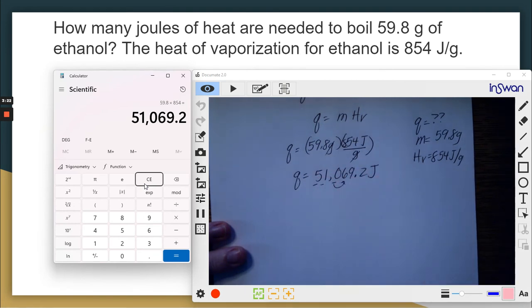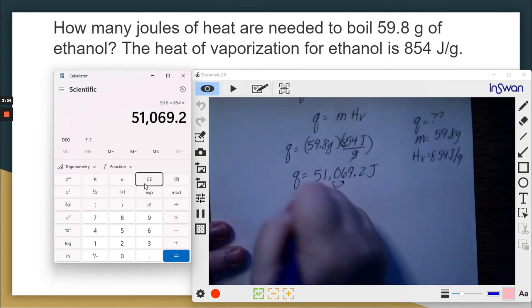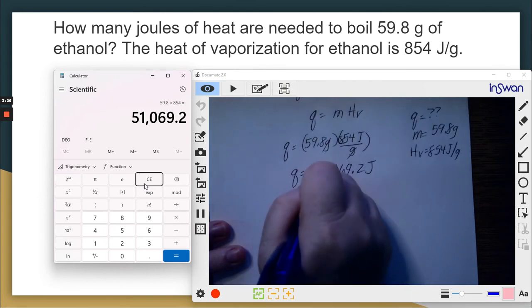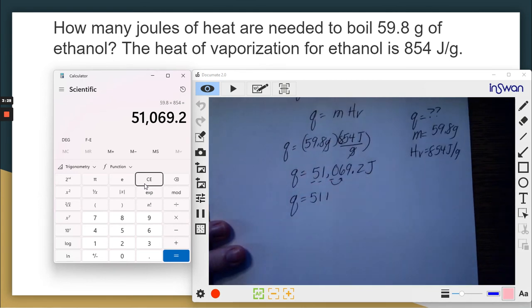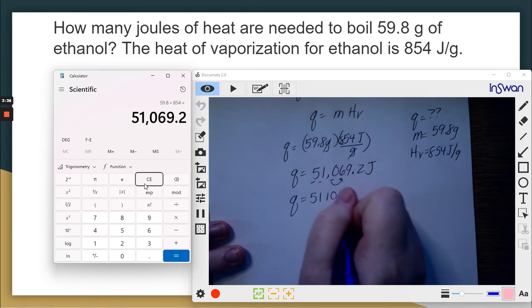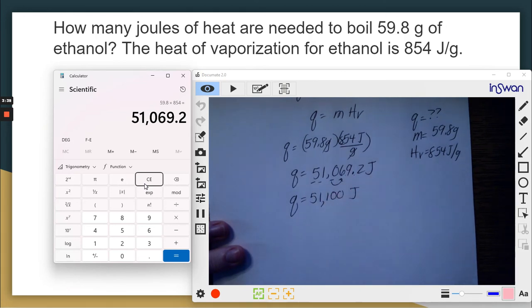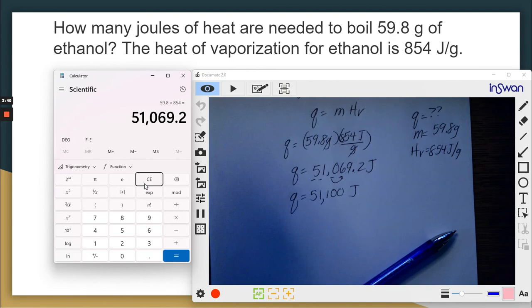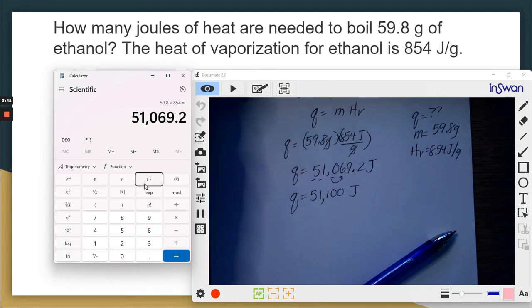So Q equals five, one, one. And now I have to fill in zeros. I only fill in zeros until I get to the decimal point. So zero, zero joules. So 51,100 joules. And that is how you use the heat of vaporization formula. I hope you learned something new today.